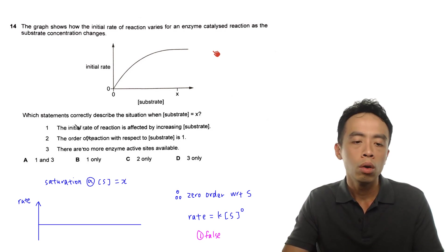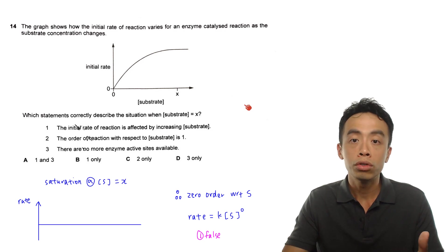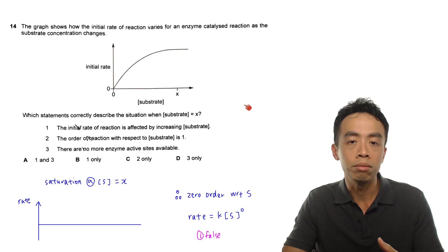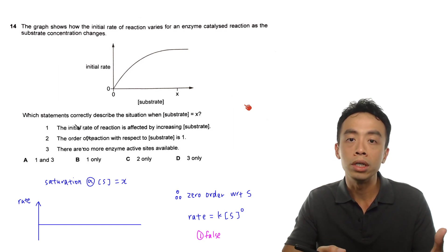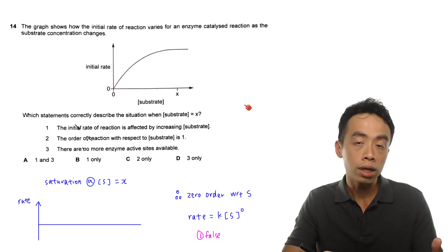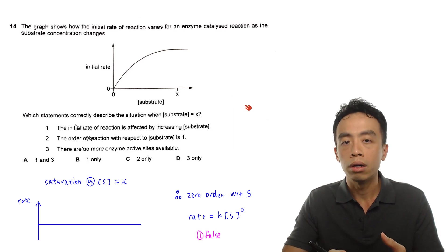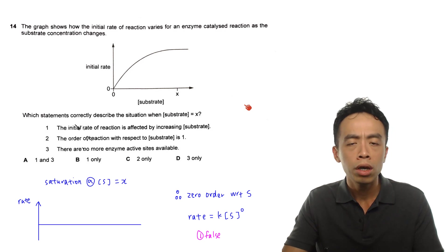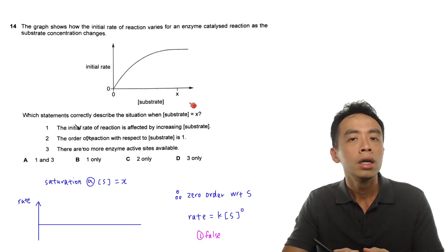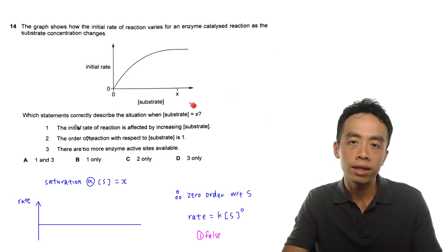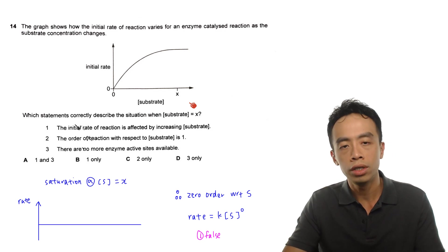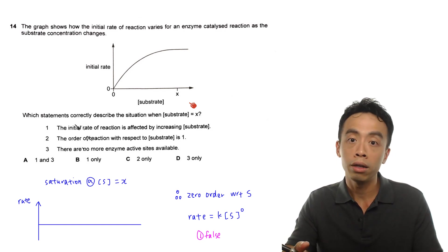Saturation occurs when the concentration of the substrate exceeds the concentration of the enzyme — meaning all the enzymes are being utilized and all the active sites are being used to catalyze the reaction forming products from substrate. So any further increase in the concentration of substrate means there is not enough enzyme to catalyze the reaction. We can treat the enzyme as a worker in a factory — say if I have 10 workers.